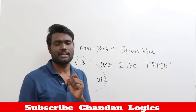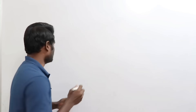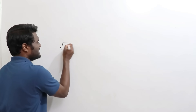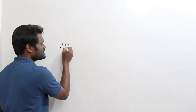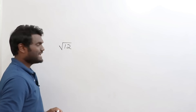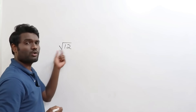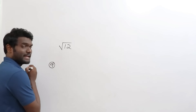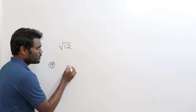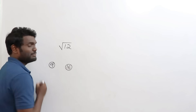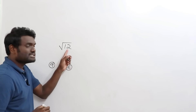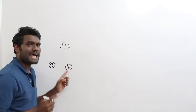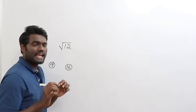Let us calculate square root of 12. It's really simple. What you need to know is the perfect square closer to 12. The perfect square closer to 12 will be 9, or it could be 16 as well.